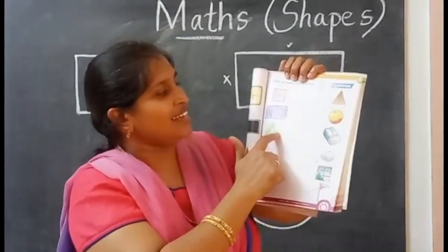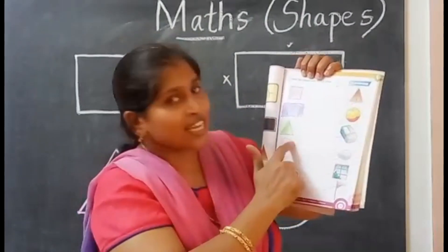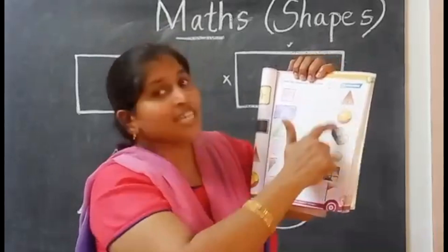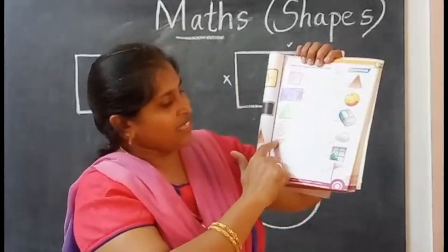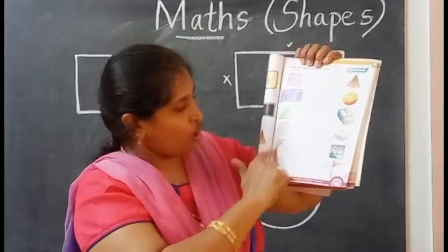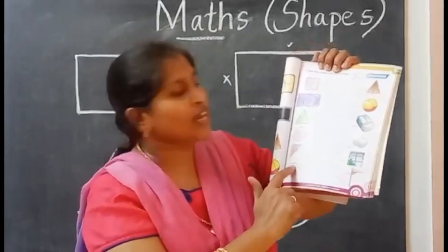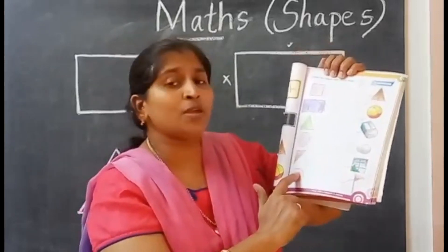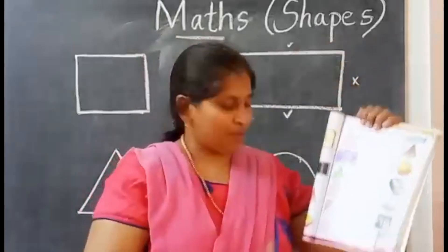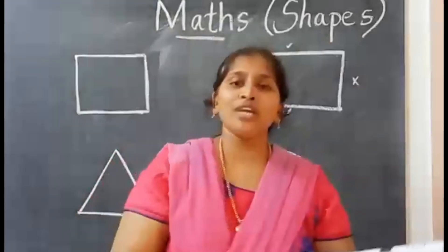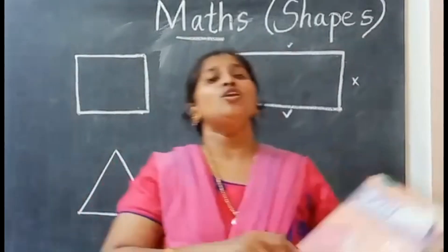This is rectangle — the eraser looks like a rectangle shape, so match. Next, triangle — this is a triangle, so match. Circle — your ball is in circle shape, so match. This one is also a rectangle, so match. Next, oval — as I told you in the previous class, an egg is in oval shape, so match.